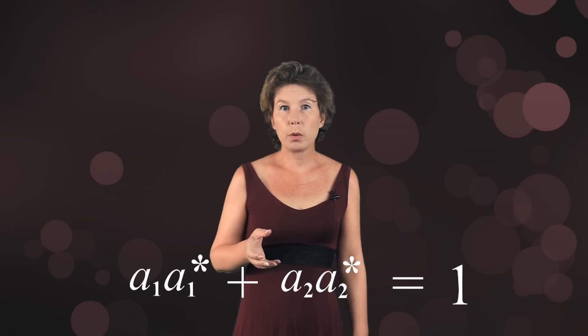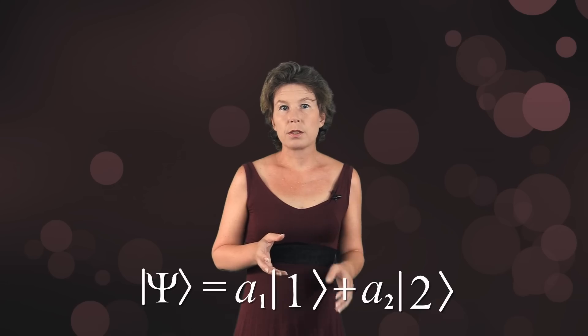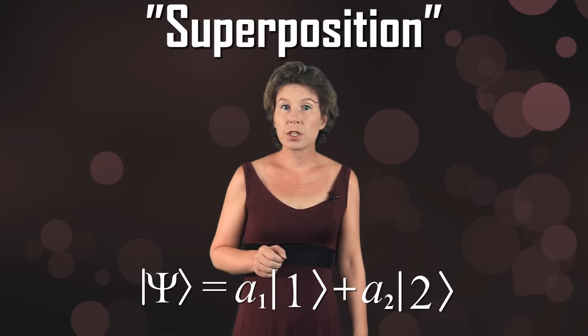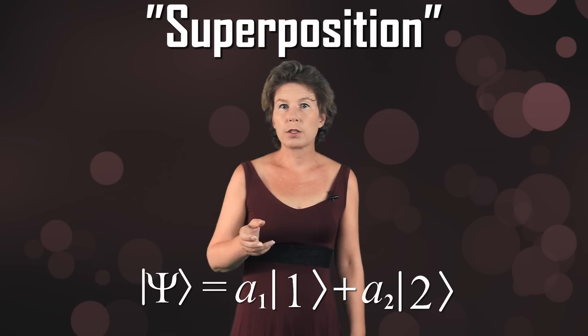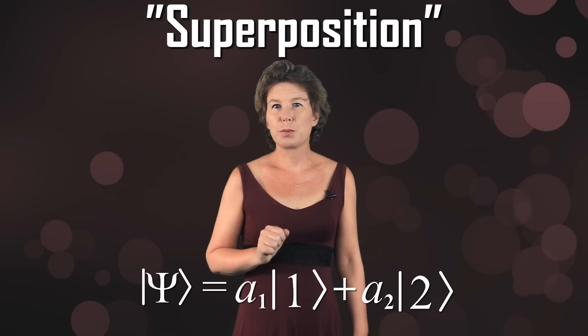Since the probabilities have to add up to one hundred percent, this means the absolute squares of the coefficients have to add up to one. With these two basis vectors, you can describe a superposition which is a sum with factors in front of them. For more about superpositions, please watch my earlier video.